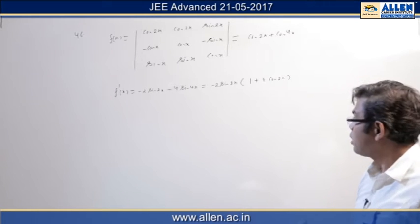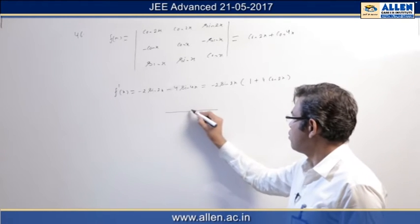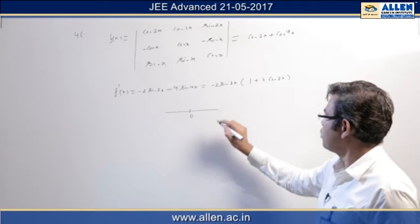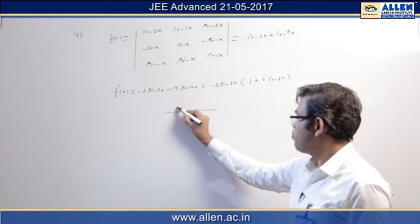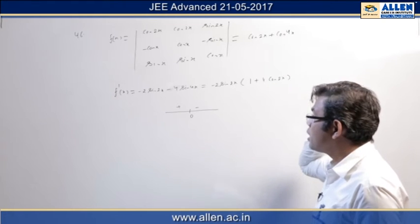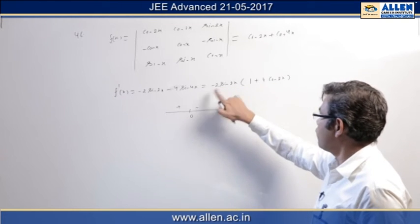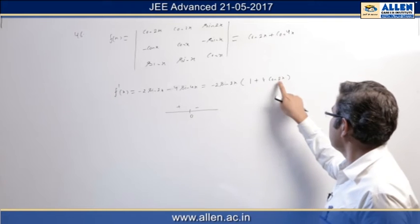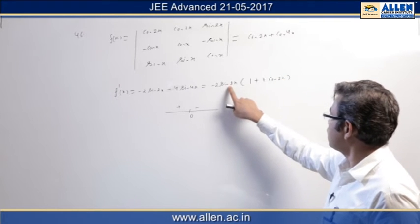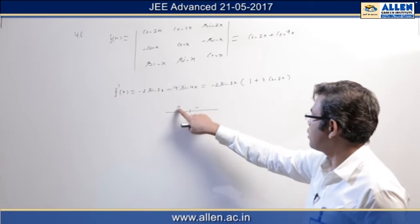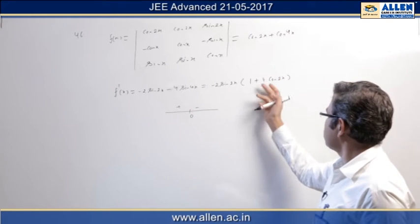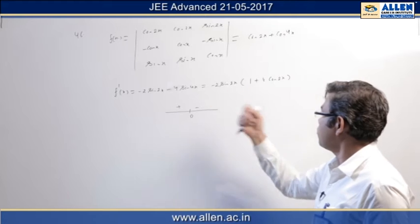Now over here we can easily see about zero at x equal to zero, derivative is zero and about zero sin changes from plus to minus. Why? Because this quantity is positive and this is negative. For x less than zero, for x just less than zero, cos 2x is positive, 1 plus 4 cos 2x is positive, sin 2x is negative minus. So this gives plus sin and when you will cross zero, just above zero it is positive and minus sin 2x becomes negative.